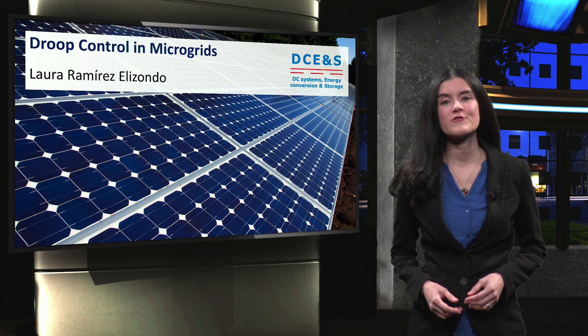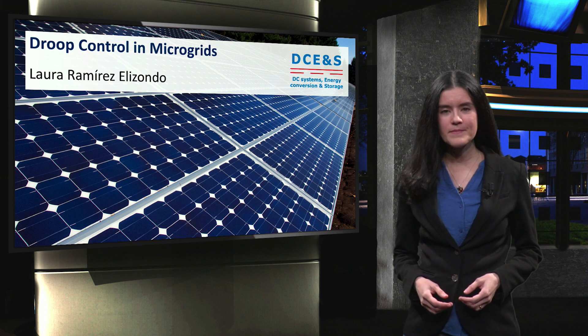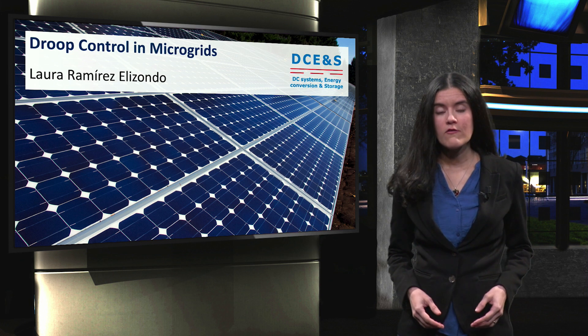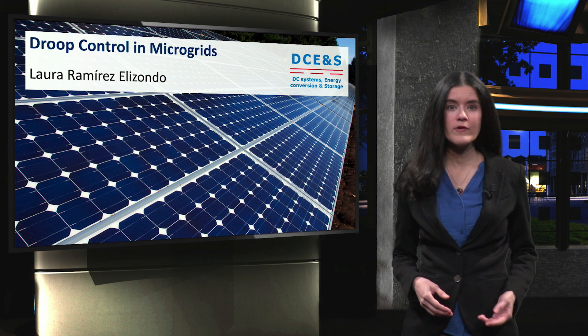Droop control is one of the most common strategies implemented in microgrids. Droop control acts over the four main physical characteristics, which are voltage, frequency, real power, and reactive power.